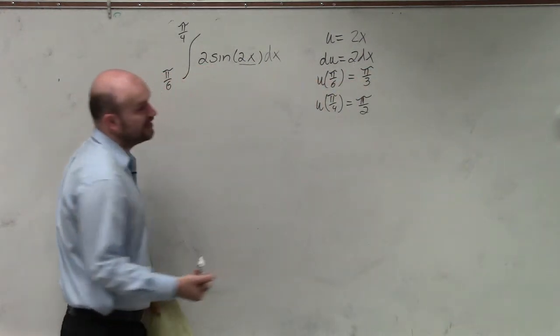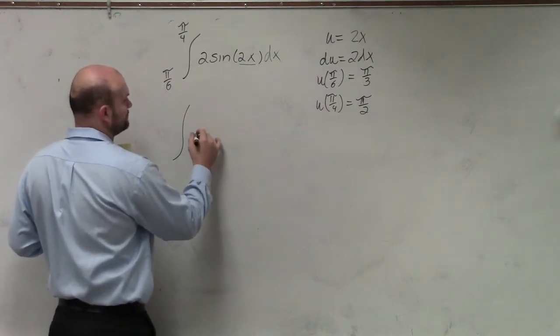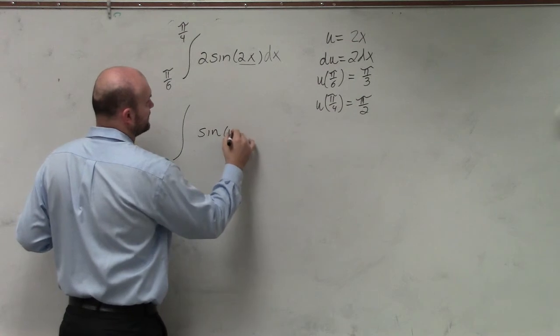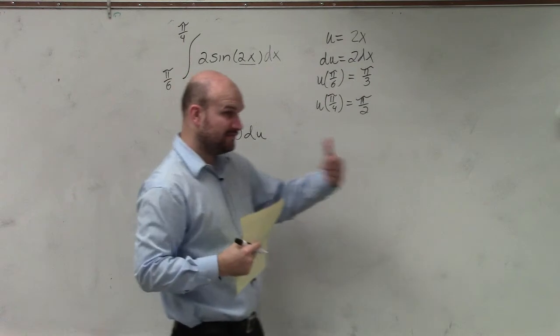So now that we're changing our integral from u, so now we're basically rewriting this as sine of u, and then 2 times dx is equal to du. So now if we're integrating from du,